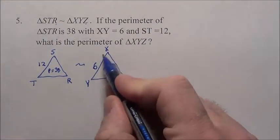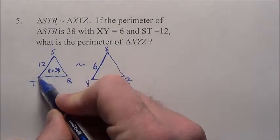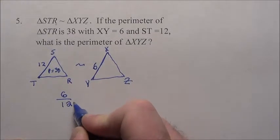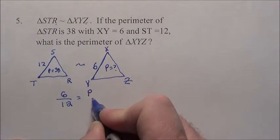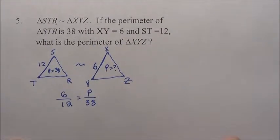It says what's the perimeter around this guy? Well, we have all we need. We know 6 corresponds to the 12, so I'm going to write them and say hey, 6 corresponds to the 12 as the perimeter of this guy, which we don't know, I'm going to use P, corresponds to that guy's perimeter, which it told us was 38.